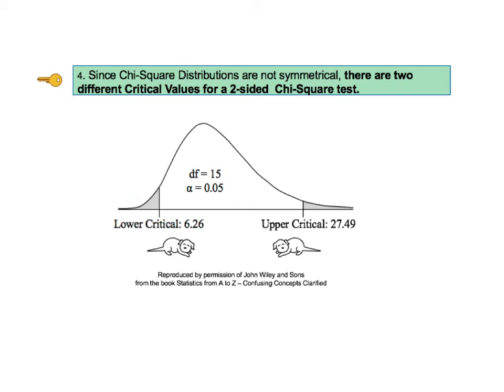Unlike Z and T, we do not add or subtract these from the mean. The two critical values of chi-square, produced by table, software, or spreadsheets, are the final values to be used. If you're looking these up in a two-sided table, you may need to look up the critical values for alpha over 2 and for 1 minus alpha over 2. Sometimes two different tables are provided for upper and lower critical values, or spreadsheets or software will do this for you.